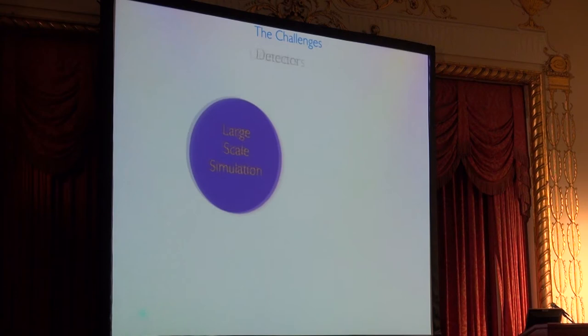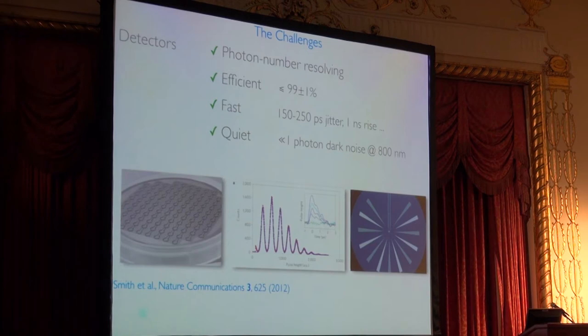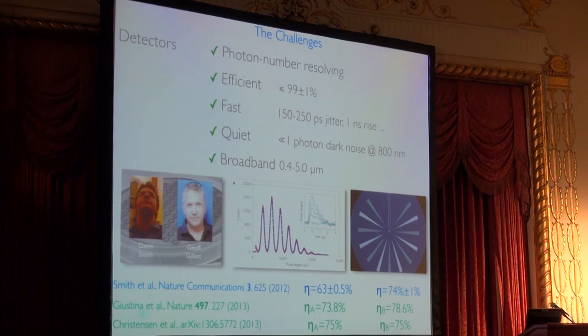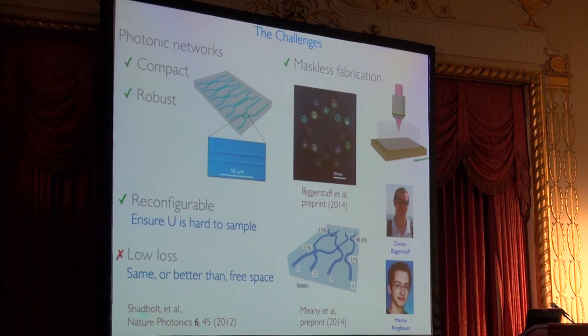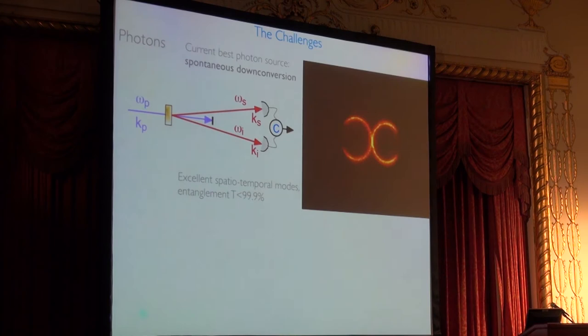Detectors is a solved problem. You can now, for money and influence, get photon number resolving, efficient, fast, quiet detectors and broadband. You can't get any one detector that's all of these things, but you can get close. And people have used them to solve all kinds of interesting problems. Networks is becoming a rapidly solved problem. We heard in Alain's talk that you can do it with a surface mount, or you can come in with a strong laser beam. We've got collaborations where you write it into a glass block. You can tune them to make sure unitary is hard to sample. They're not as low loss as free space, but they're getting there. So, that brings us to photon sources.